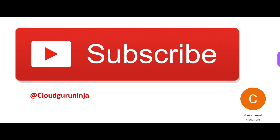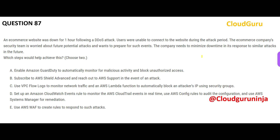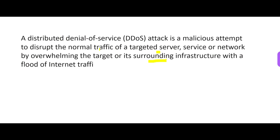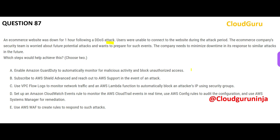Let us look at the first question. The story is simple: a DDoS attack happened. A DDoS attack is a primary concern in internet security today. The attempt is to stop normal traffic to a website, bringing the business down. For example, if you are amazon.com and the website is down for five hours, you lose all those transactions. There was significant downtime during the attack period.